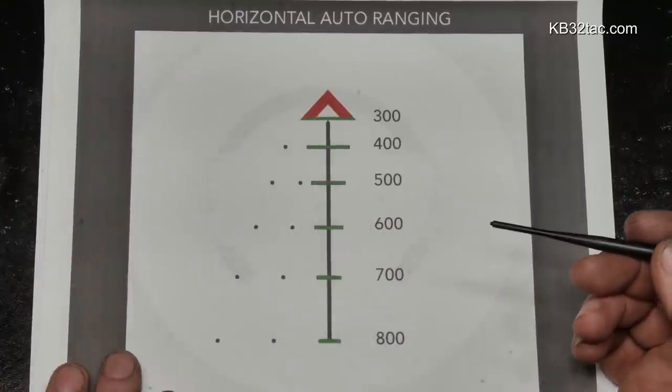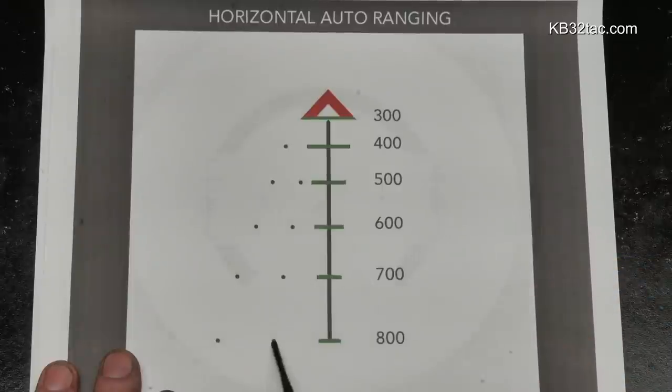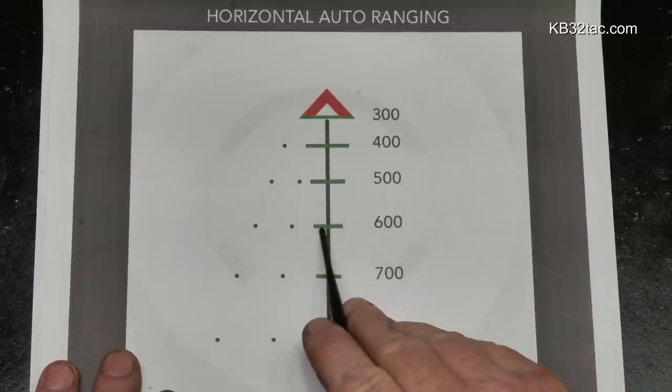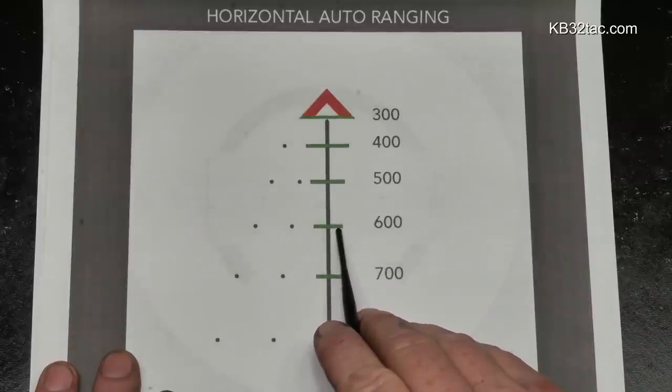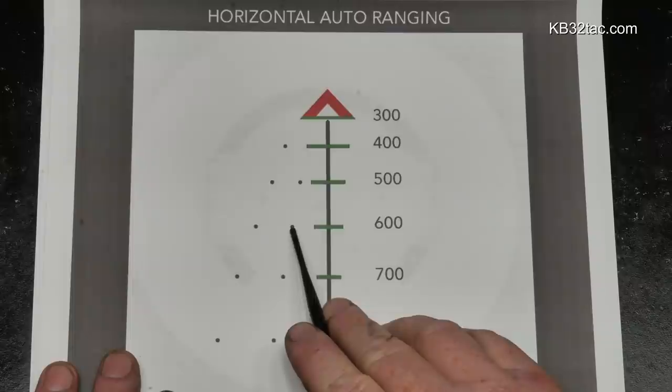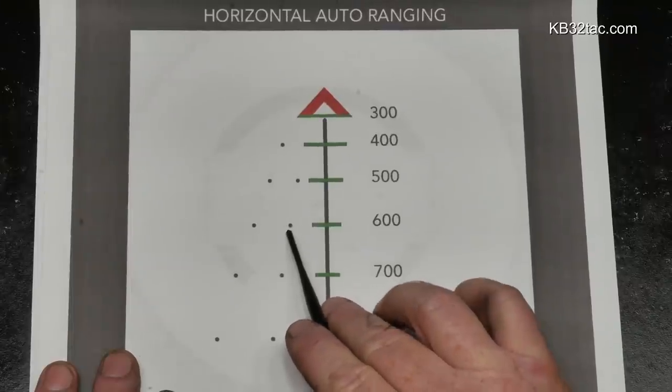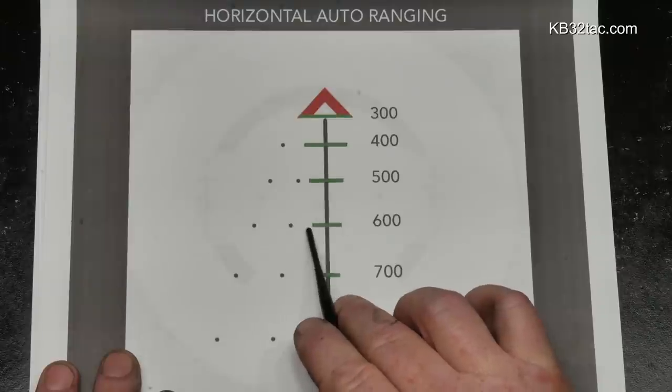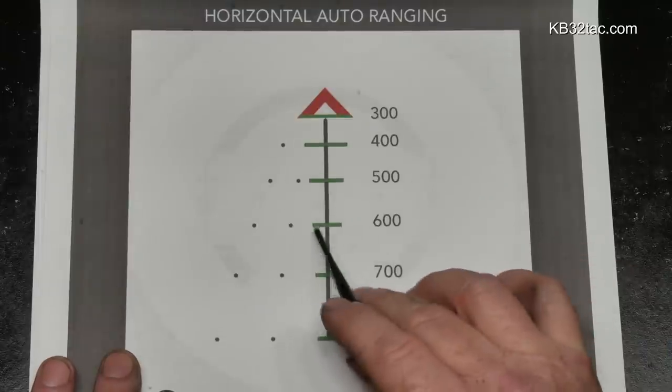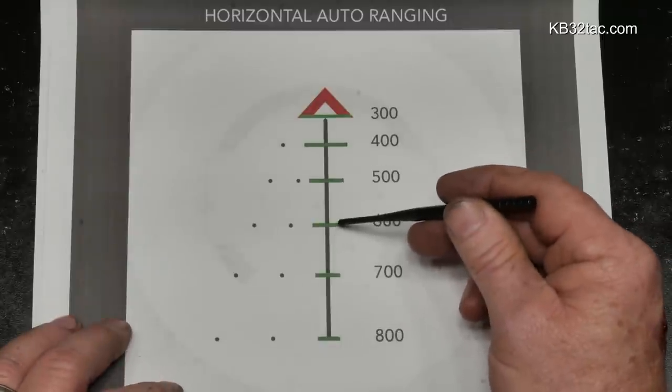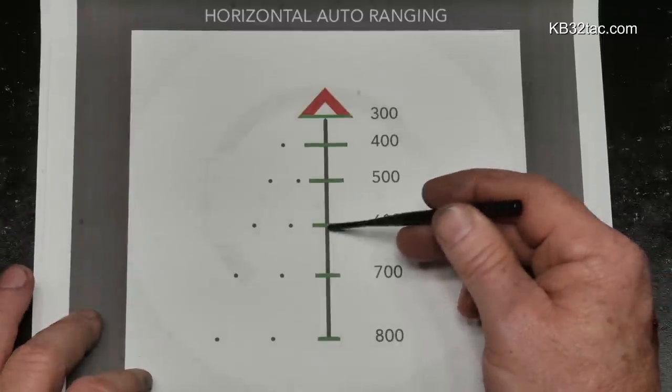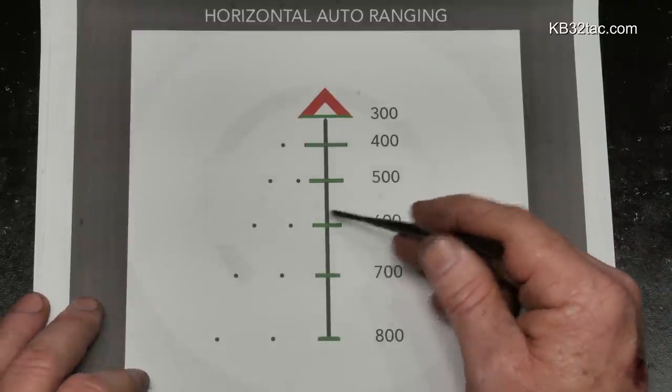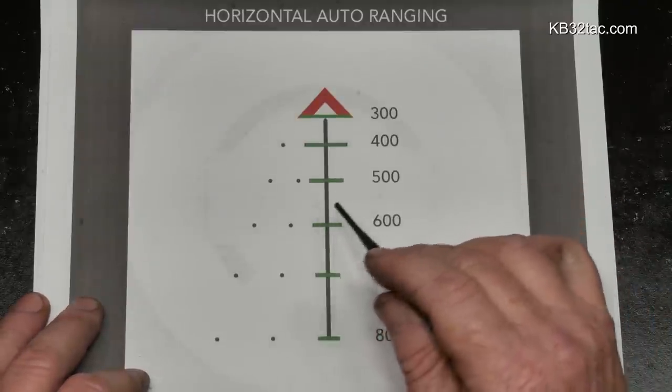So we've got the BDC, we've got the horizontal ranging, and next what we have are the wind holds. Right here are little dots. If you range something out to 600 yards and you estimate there is a five mile an hour wind, cross wind, you're just going to hold that target right here. And guys, these are accurate as all get out. 10 mile an hour, five mile an hour, about two and a half right here is what I found it really works well.